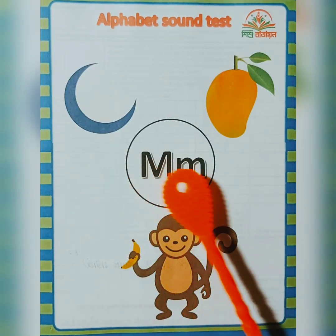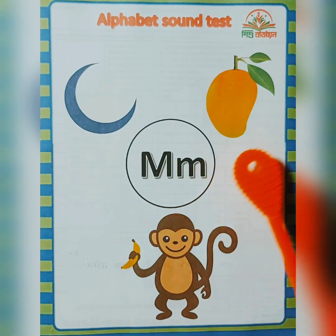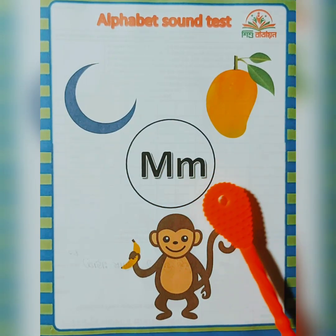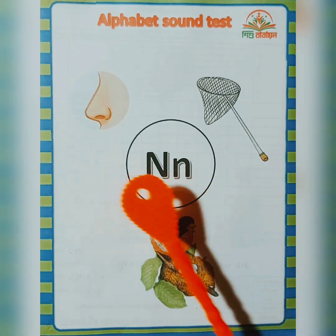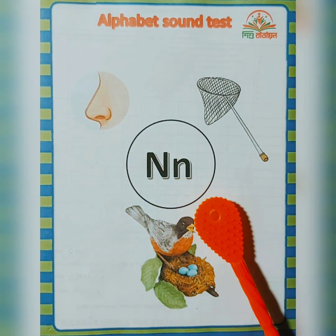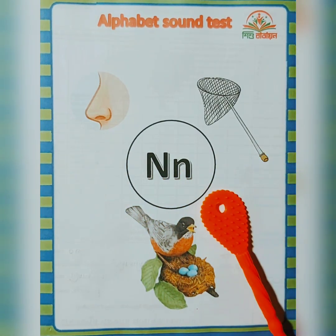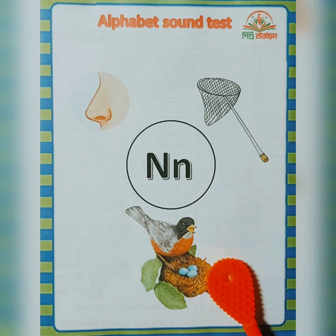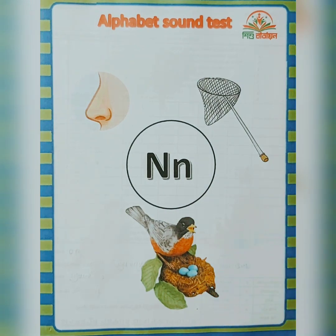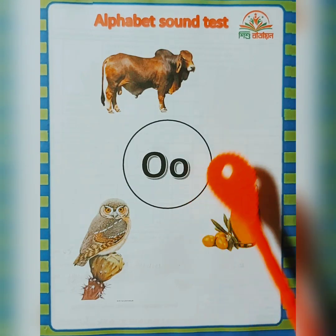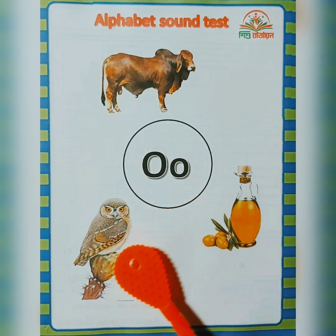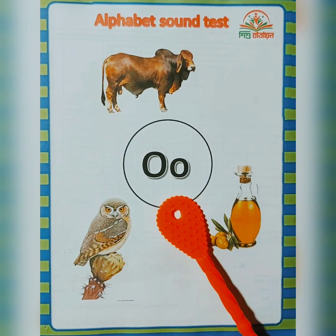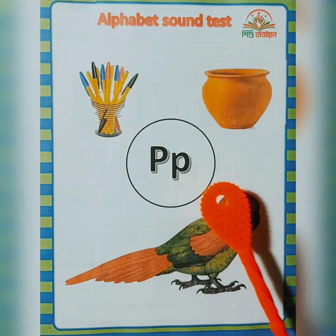M — moon, mango, monkey. N — nose, net, nest. O — ox, owl, oil.